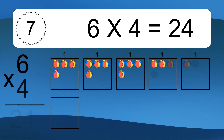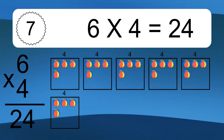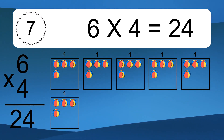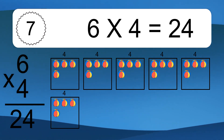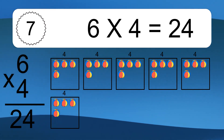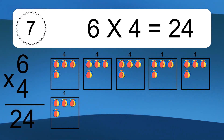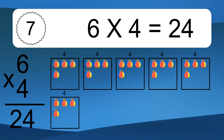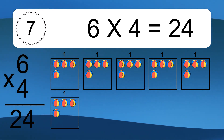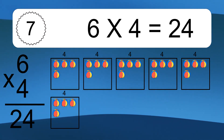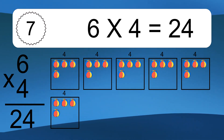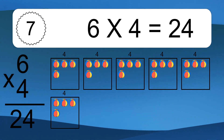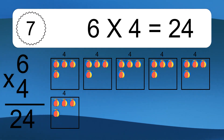6 times 4 equals what? 6 times 4 equals 24. We have 6 boxes, and each box has 4 colorful balls inside. If you count all the balls in all the boxes together, you will have 6 times 4 balls. This equals 24 balls.